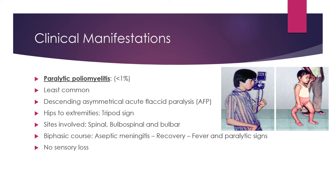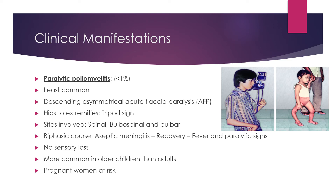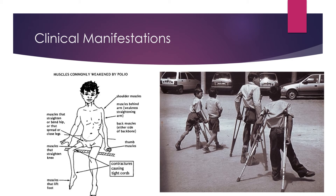Risk factors include older children, adults, pregnant women, persons who undergo heavy muscular exercise or trauma at the time of CNS symptoms, and tonsillectomy. Post-polio muscle atrophy syndrome may also occur decades after the episode of paralytic poliomyelitis. The clinical picture shows muscles commonly weakened by polio: shoulder muscles, the muscle behind the arm, back muscles, the muscle that lifts the foot, the muscle that straightens the knee, and the muscle that straightens the bent hip — giving the patient the specific AFP posture.